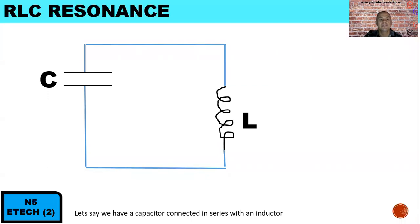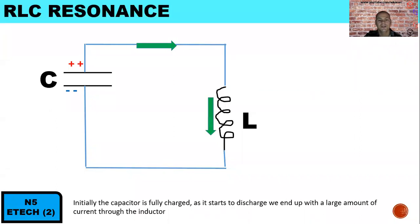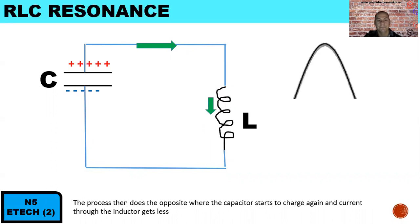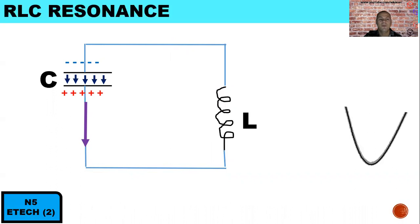In an RLC circuit at resonance, we have a capacitor connected in series with an inductor. There is a positive charge and a negative charge across the plates of the capacitor, and the current flows in a clockwise direction from positive to negative. Initially the capacitor is fully charged, and as it discharges we get a large current through the inductor. The process then reverses — the capacitor charges again and the inductor current decreases. This repeats, producing an oscillating circuit, which is our AC circuit.